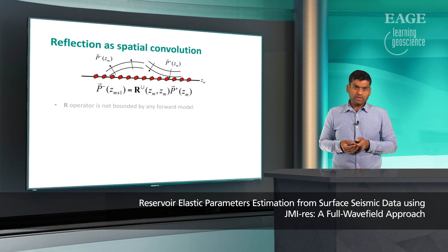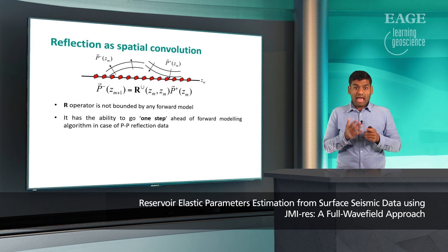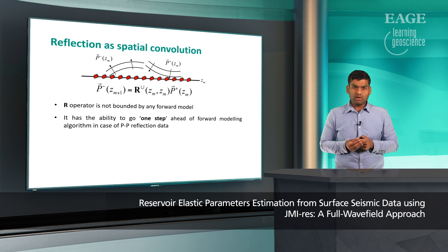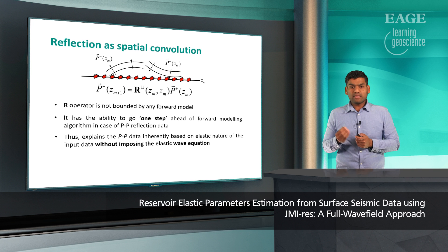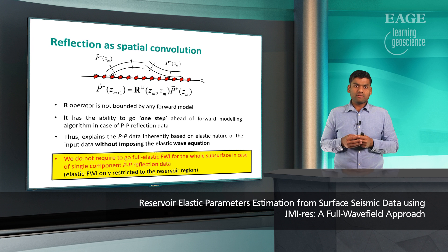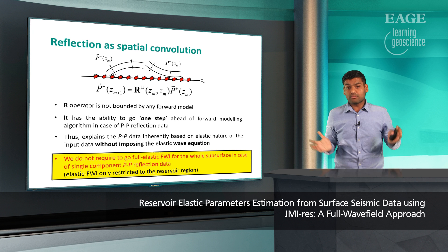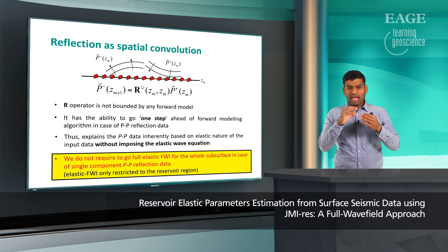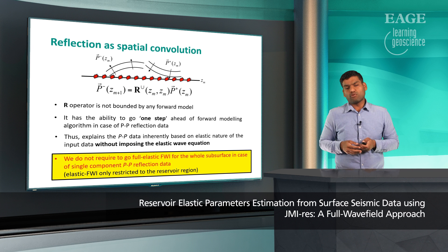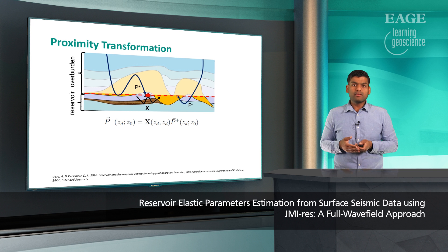In JMI, the reflectivity operator is not bounded by any forward model. As a result, it has the ability to go one step ahead of the forward modeling algorithm in the case of PP reflection data, explaining PP reflection data amplitudes based on the elastic nature without imposing the elastic wave equation. The consequence is that we do not have to go fully elastic for the whole subsurface. Instead, we create data using JMI-based redatuming at the reservoir level and then only apply elastic FWI at the reservoir level, saving considerable computation.